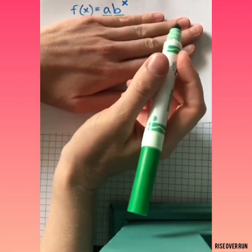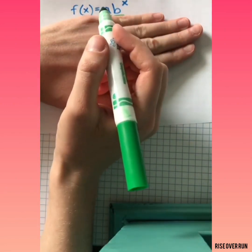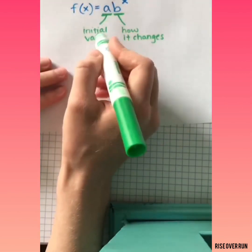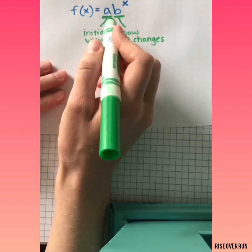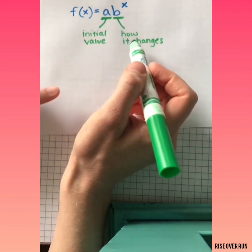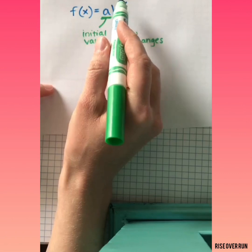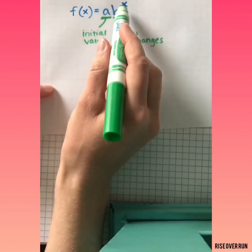Here's the standard form for exponential function. Let's look at what these different variables represent. A is your initial value, there will be a number there. B will describe how that value is changing, you'll have a number here as well. And then x is your variable. It usually represents time.